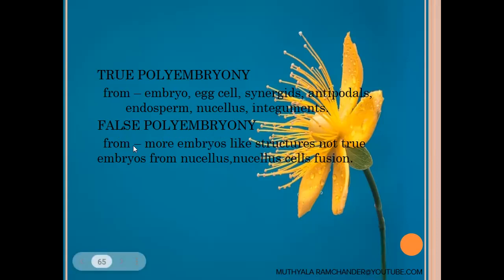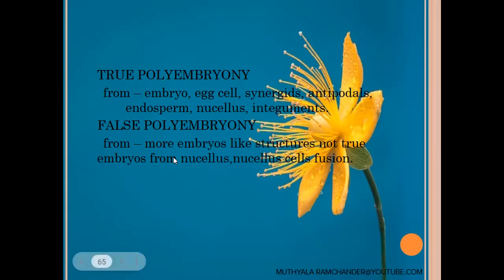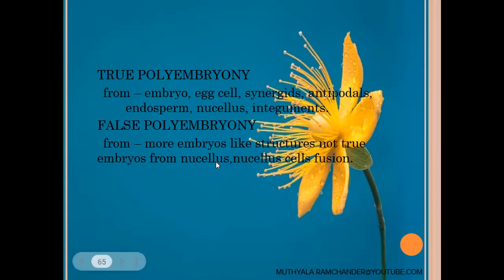False polyembryony involves more embryo-like structures developed from nucellus cells or from cell fusion, but those embryos are not true embryos — they look like embryos but cannot develop into plantlets. They are developed from nucellus (the degenerated nucellus condition), where nucellus cells develop into embryo-like structures. Nucellus cell fusion also forms zygote-like embryo-like structures, but these cannot develop into plantlets. These embryo-like structures are called false polyembryony.